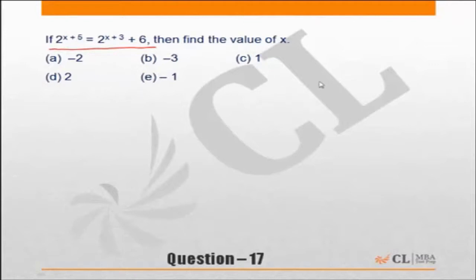Mathematically you can solve this, I'm very sure about it. You will transpose this to the other side, take 2^(x+3) common and solve it. But you can do the question faster if you just substitute the options.